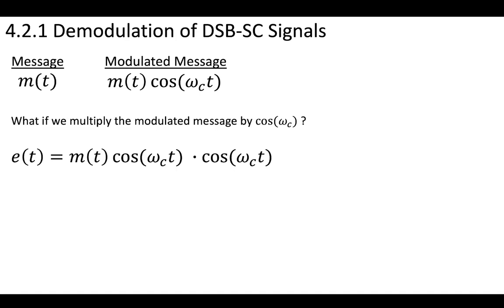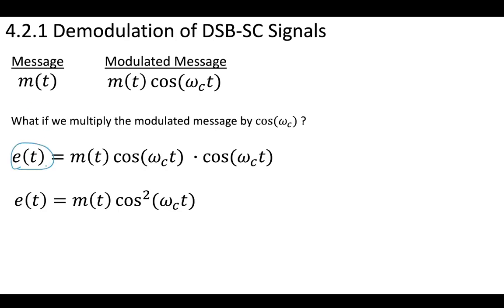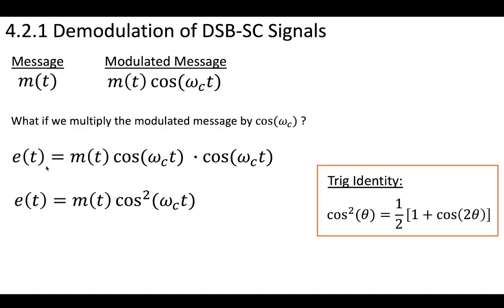If we do that, this will introduce a cosine squared term. We'll call the modulated modulated message E(t). If you remember this trig identity, we can substitute that in for this cosine squared. When we do that and distribute that through,